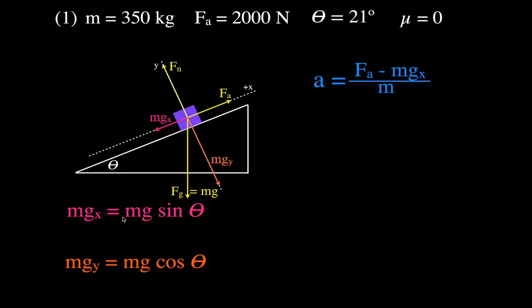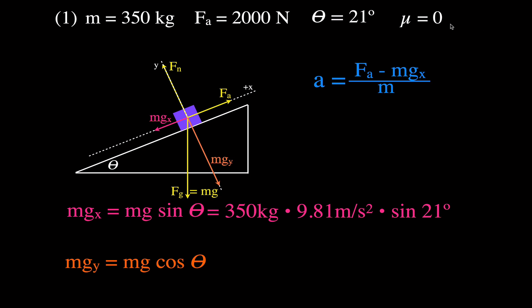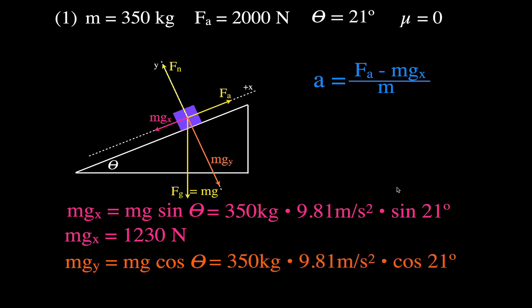So mgx equals mg times the sine of the angle: 350 kilograms times 9.81 meters per second squared times the sine of 21 degrees, giving us an x component of the gravitational force of 1,230 newtons. For the y component — which we won't use in this problem — we have 350 times 9.81 times the cosine of 21 degrees, giving us 3,205 newtons.